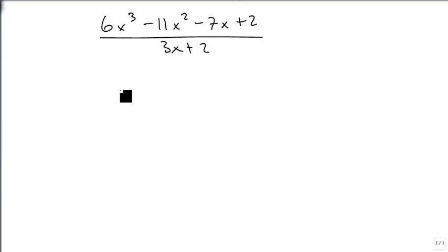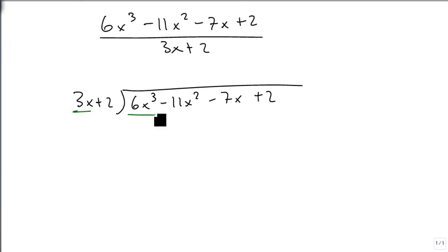Well, same as before, we're going to set up our long division. We're going to put the numerator in the inside and the denominator on the outside. And then we're going to start by saying, how many times is 3x going into 6x cubed? And the answer is 2x squared. We then multiply that through and subtract.